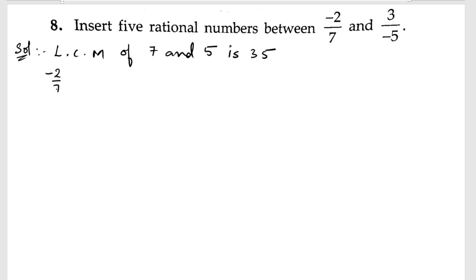Next, we will take the first rational number minus 2 by 7. Now we will multiply with 5 to make the denominator 35. Let us multiply and divide by 5. Minus 2 times 5 is minus 10, and 7 times 5 is 35.